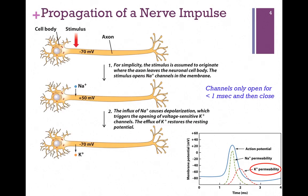Let's follow this propagation of the nerve impulse. The stimulation is initially received at the cell body, and that stimulus opens those sodium channels so that sodium floods inside the cell. This causes a shift in membrane potential — it depolarizes and we're now at plus 50 millivolts. The channels are only open for less than a millisecond and then they quickly close. As the membrane potential depolarizes and becomes more positive, this triggers the opening of the potassium channels.